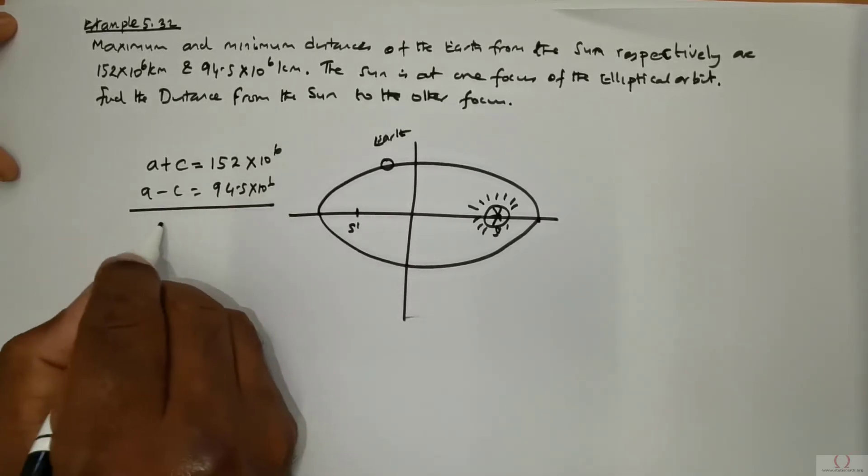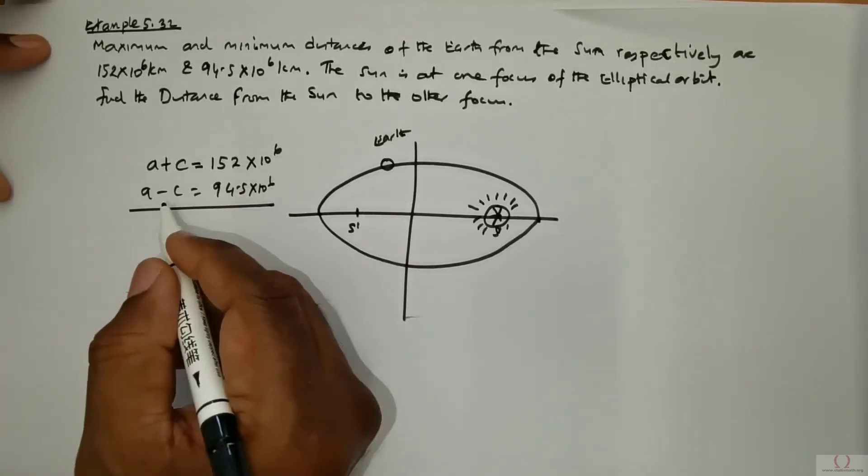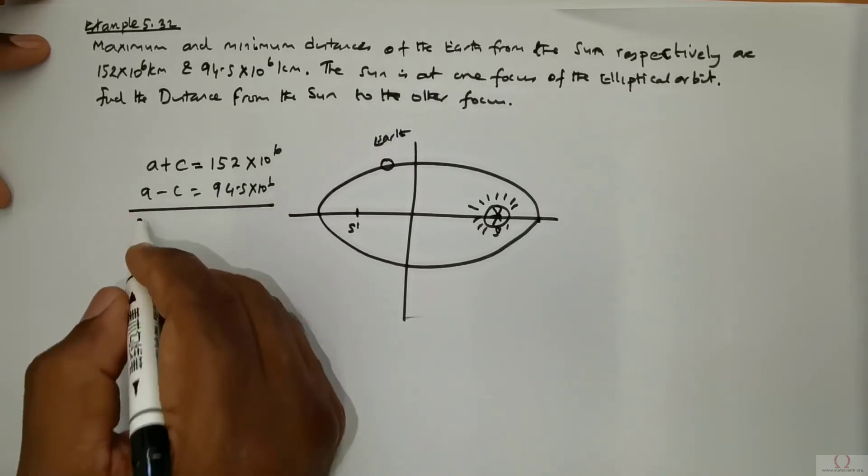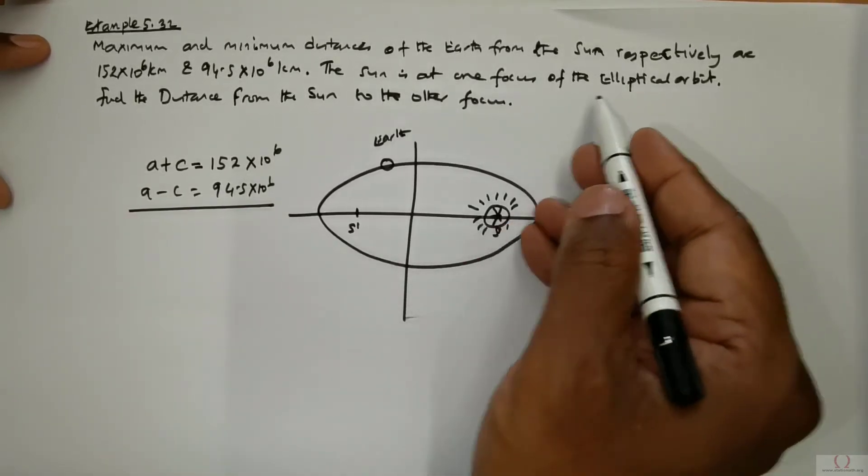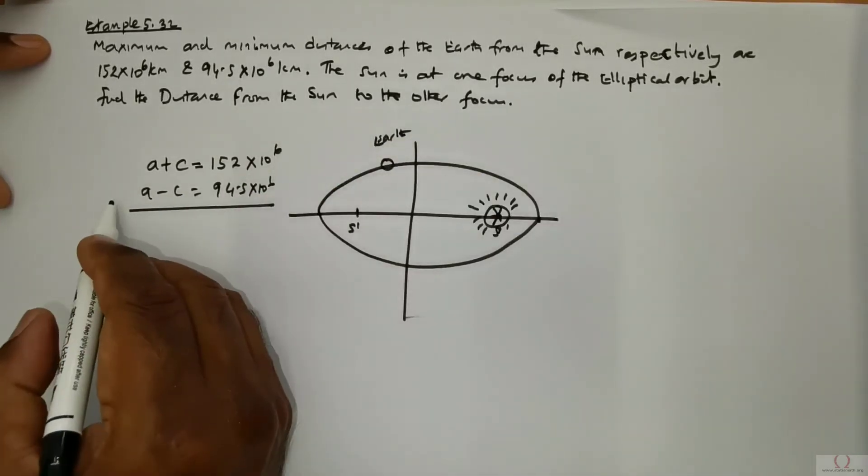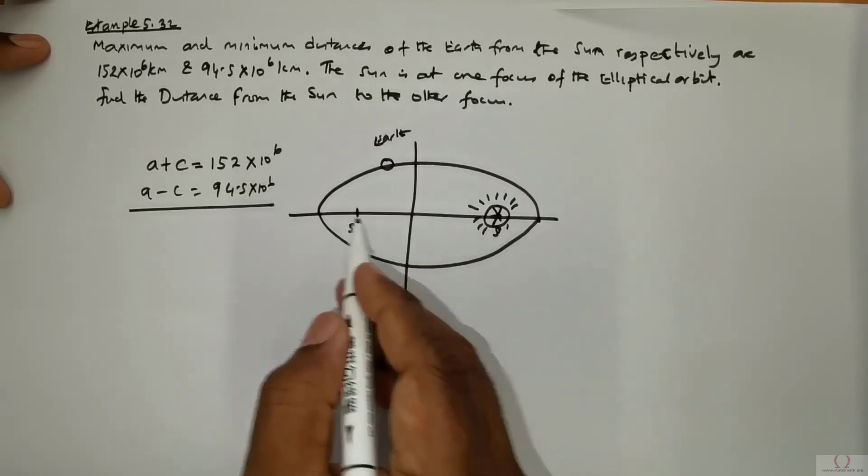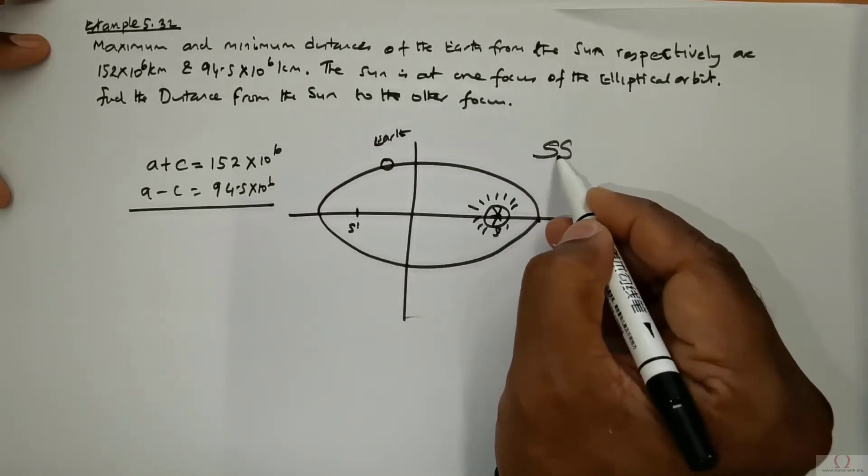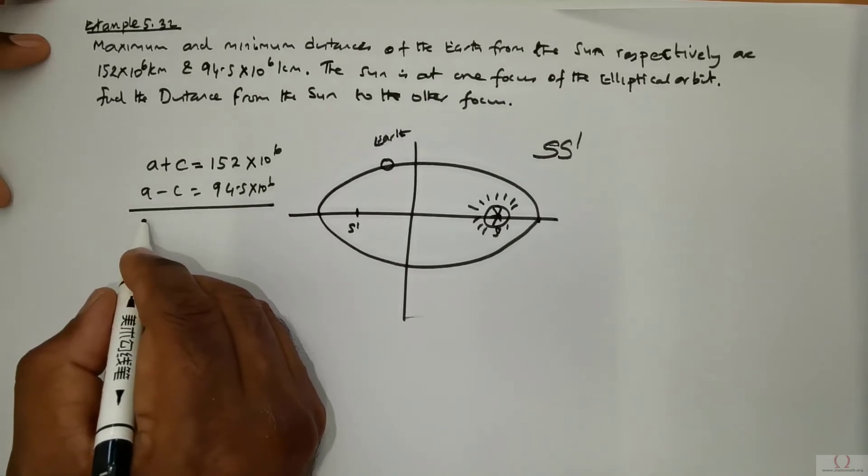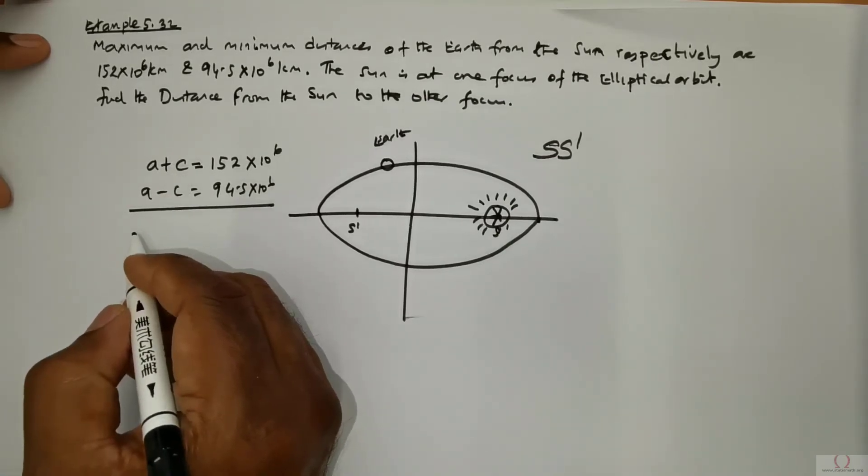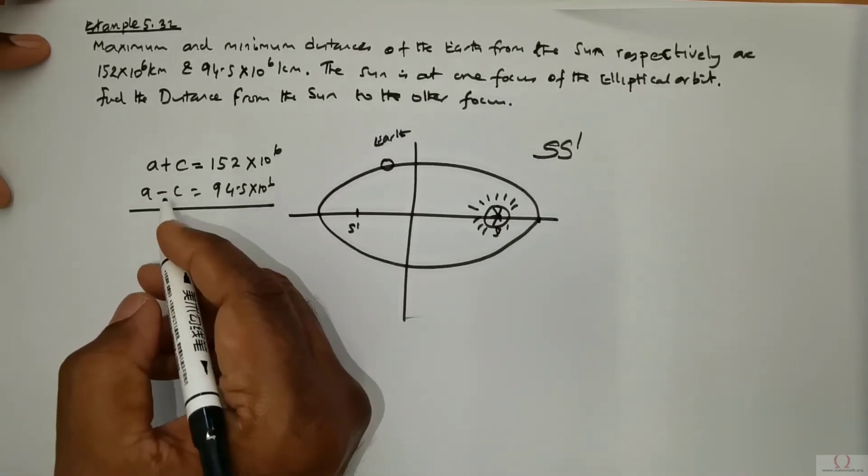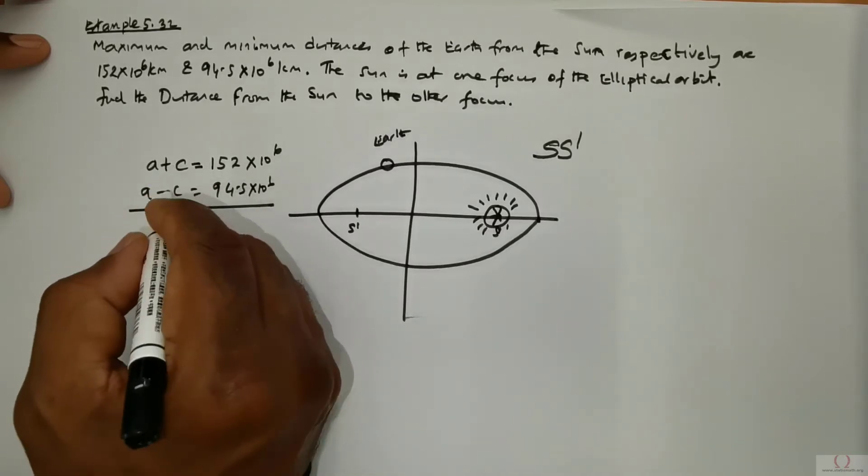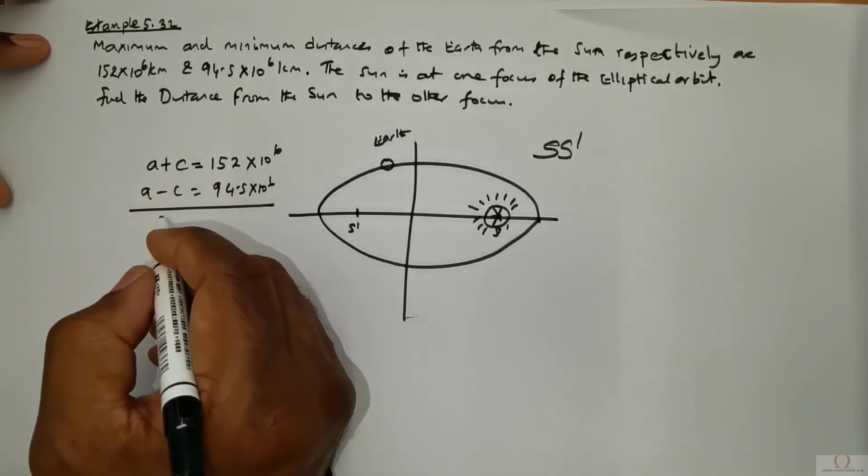Now these two can be solved. So when you solve it you can either get rid of a because focus is what is required. The distance of the sun from the other focus. So this distance is needed. That means they are asking you to find SS dash. So what we will do is we would simply directly solve it. Find a or else obtain for c.